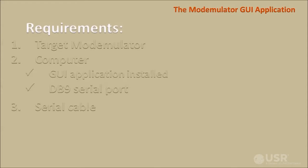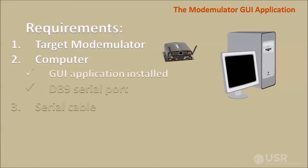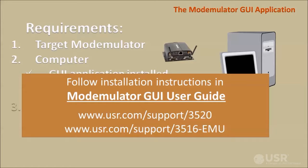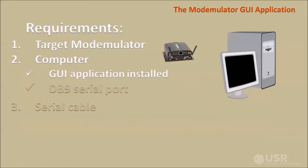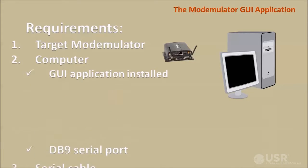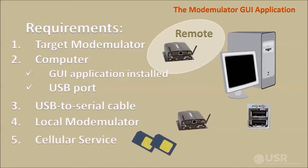The requirements for using the Modemulator GUI application are a target modemulator and a computer that has the GUI application installed. Follow the installation instructions in the Modemulator GUI user guide available at the USR support pages. A standard serial port on the computer and a short serial cable are also required, or alternatively, a USB port and a USB to serial cable. If the target modemulator is remote, an additional local modemulator is required along with peer-to-peer cellular service for both modemulators.